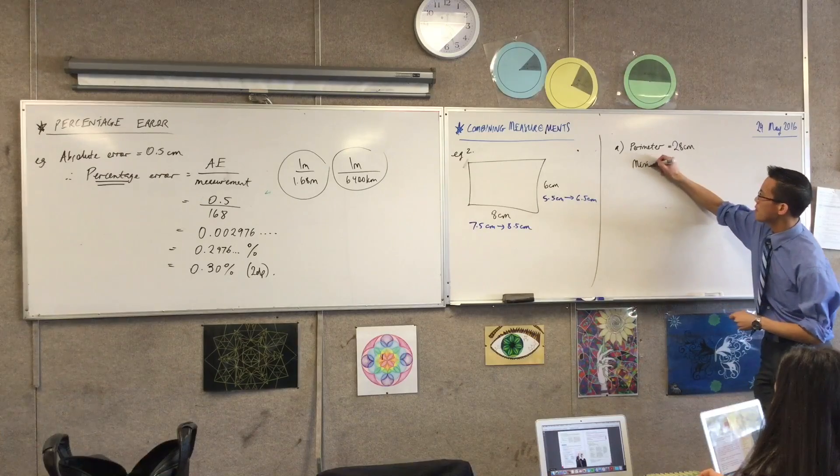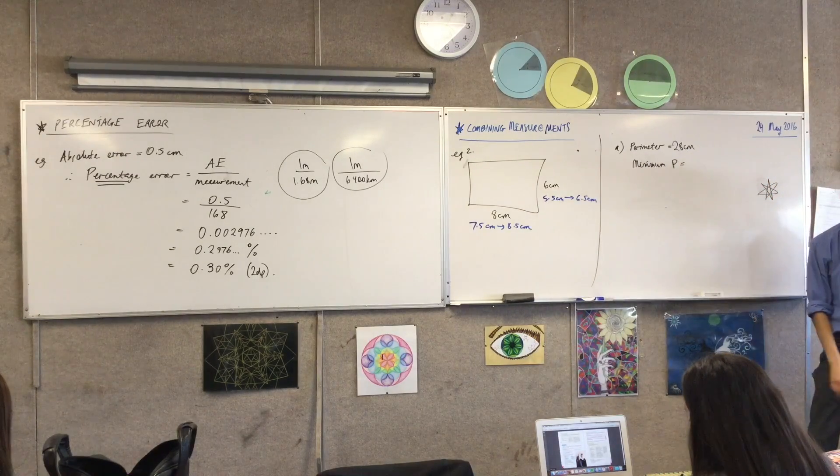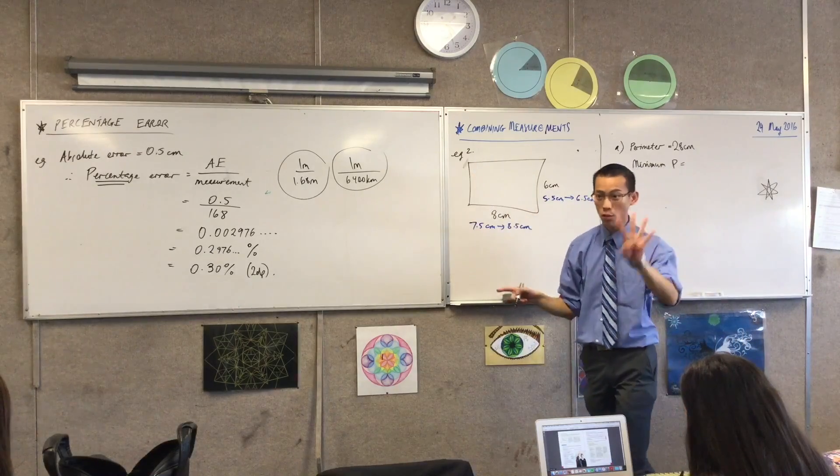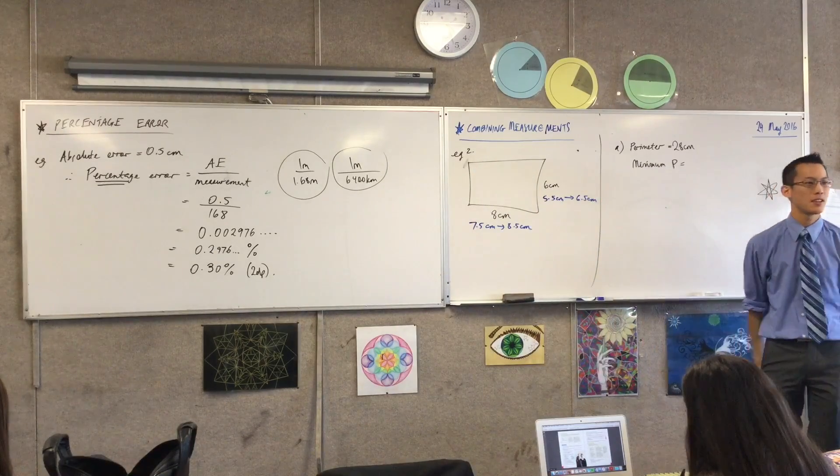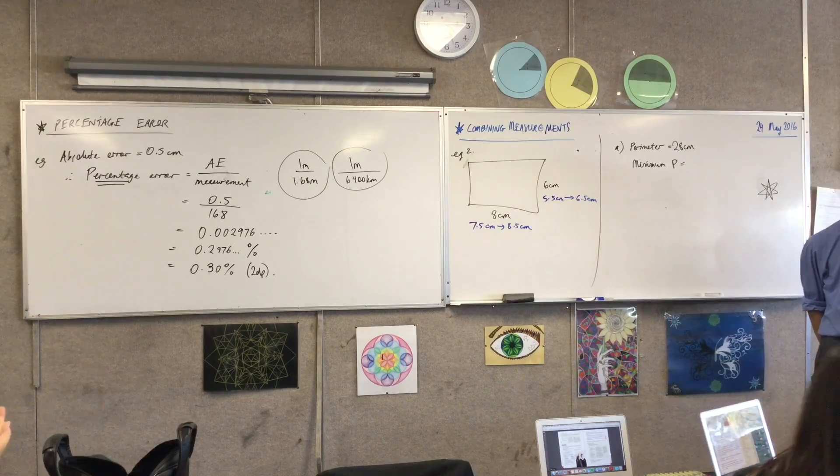So if I say, what's the minimum perimeter that I possibly could have measured? Each time I measure, and there's four times, I could be half a centimetre too small. Do you agree with that? So what's the shortest the actual perimeter could be?